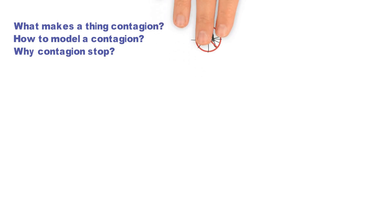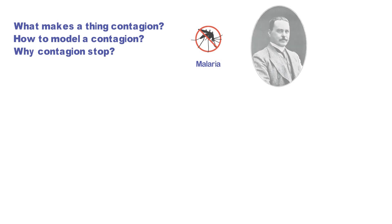Malaria is a serious and sometimes fatal disease. Until the 20th century, we didn't know much about how to deal with its outbreak. In 1895, Ronald Ross embarked on his quest to determine whether mosquitoes transmitted malaria parasites to humans.